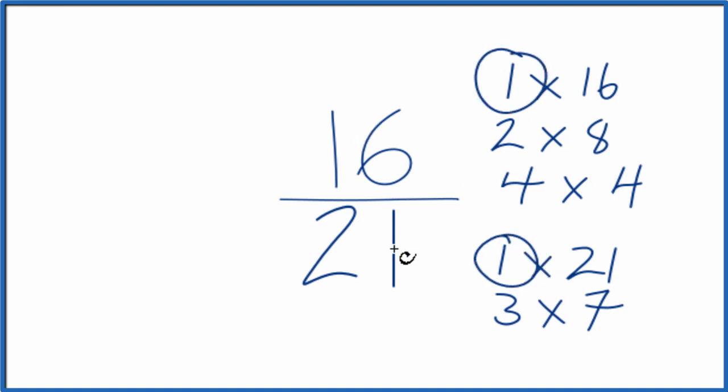So we divide 16 by 1, 21 by 1, and we'll have simplified 16 over 21.